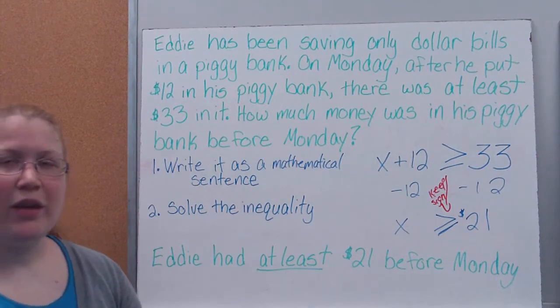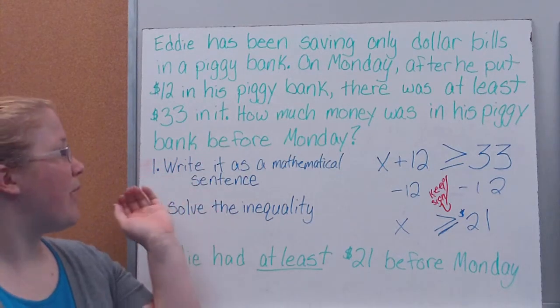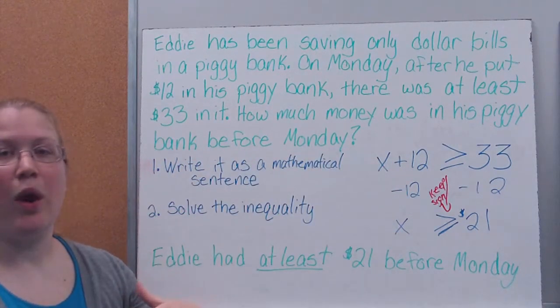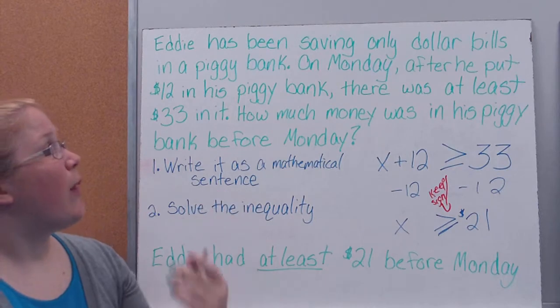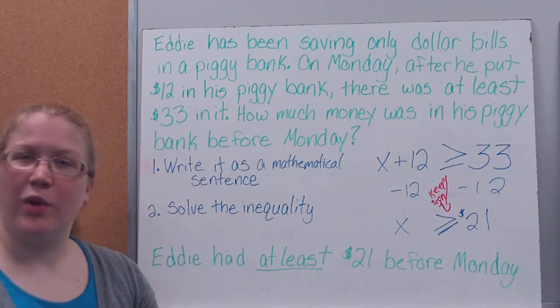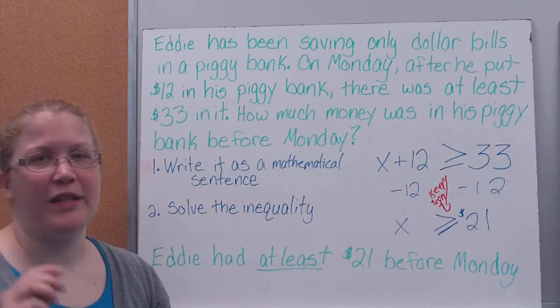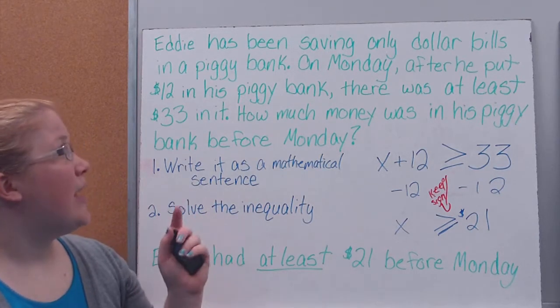So here I'm giving you a sample problem. It's the word problem that we're going to write as an inequality that we're going to solve. So our problem is Eddie's been saving only dollar bills. The reason we word it that way is it means only whole numbers. We're not going to deal with decimals right now. In a piggy bank,